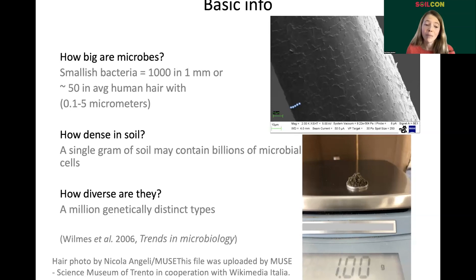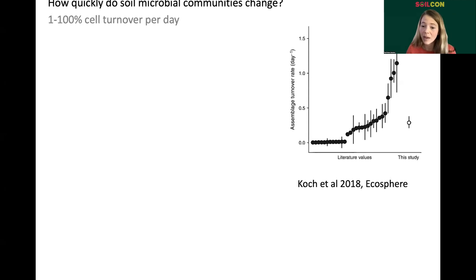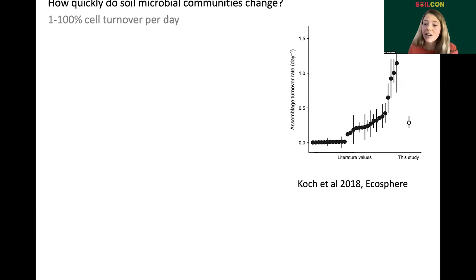How diverse are they? We're talking about millions of genetically distinct types in a single gram of soil. How quickly do these soil microbial communities change? This ranges a lot and we don't have great tools, but it can be 1–100% cell turnover per day. A recent study using a new method, QCIP, shows data from many different studies across almost 300 species or taxa in the soil, estimating between 10 and 20% turnover per day in actual soil matrix.